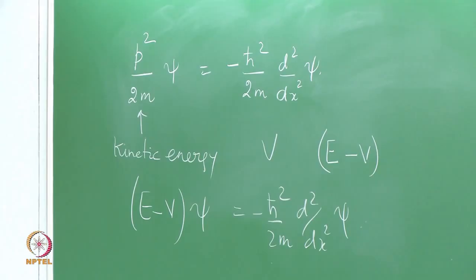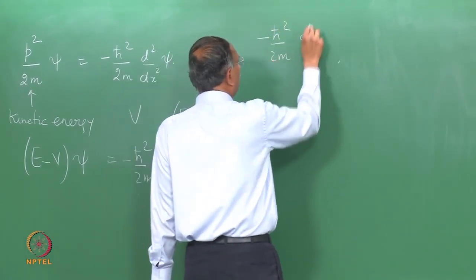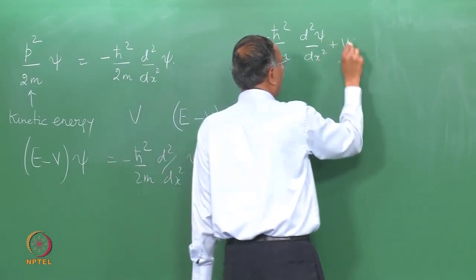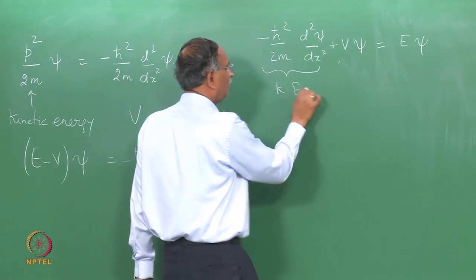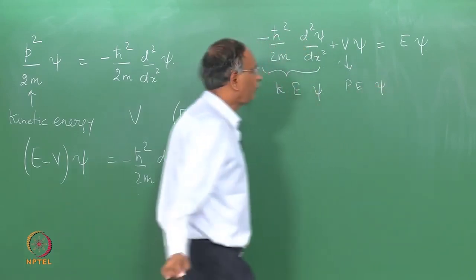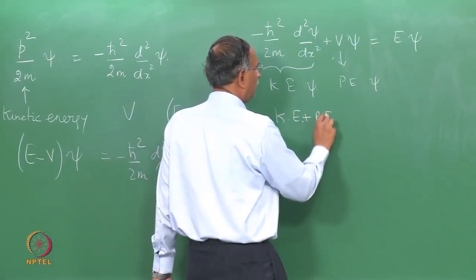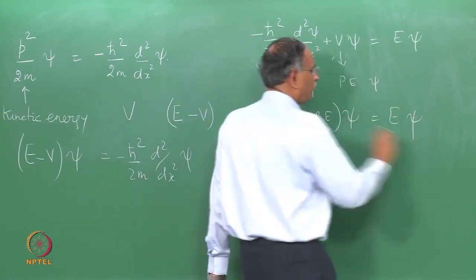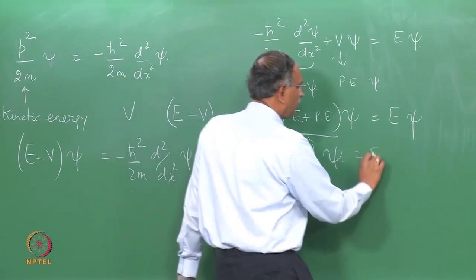One last step and you see the equation H·psi = E·psi making sense to us. Bringing V to the left-hand side: −h-bar²/2m · d²(psi)/dx² + V·psi = E·psi. The first term is the kinetic energy acting on psi, the second term is the potential energy acting on psi. Kinetic energy plus potential energy acting on psi gives a constant E times psi — this is nothing but the Hamiltonian acting on psi giving E·psi.